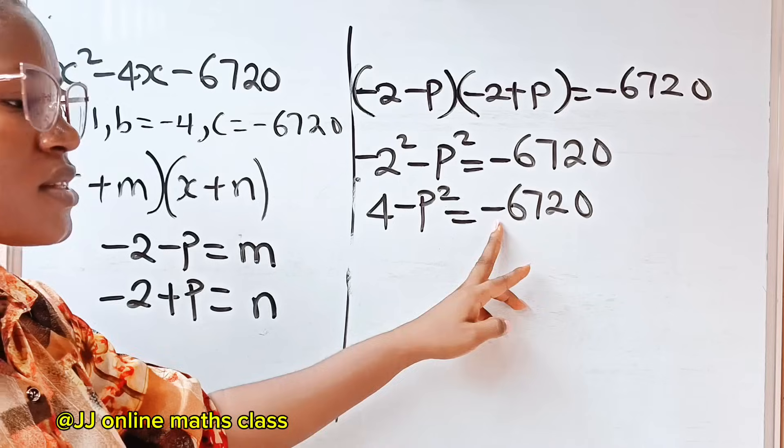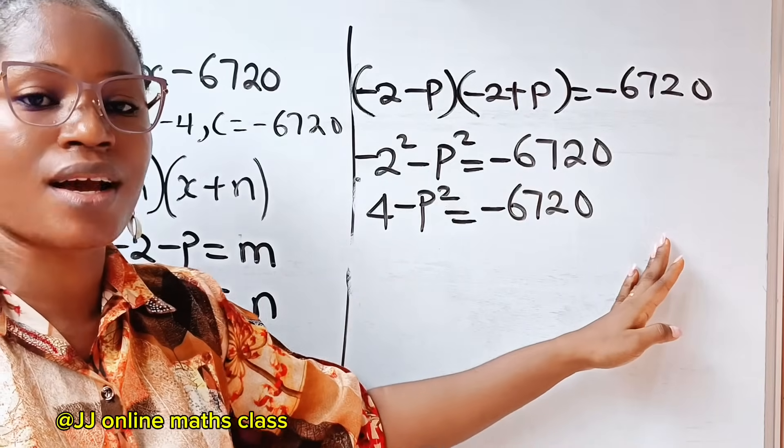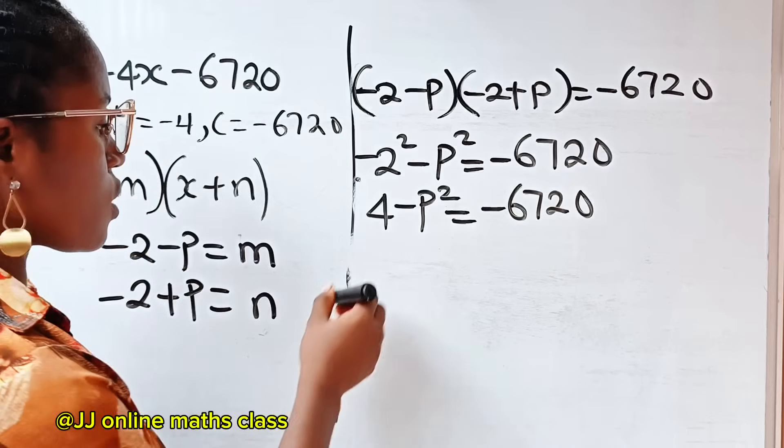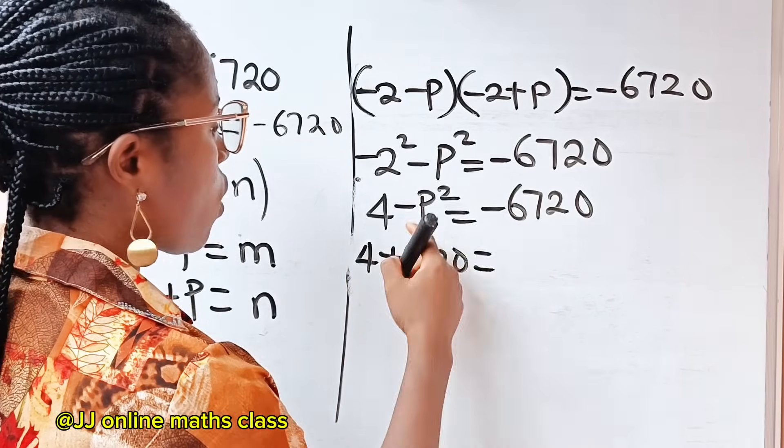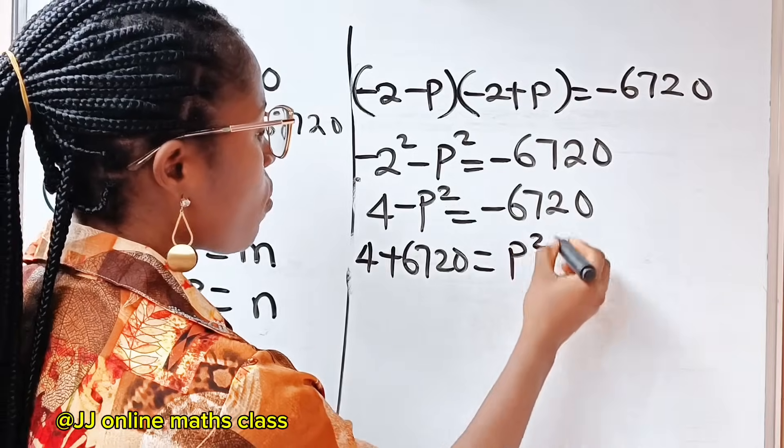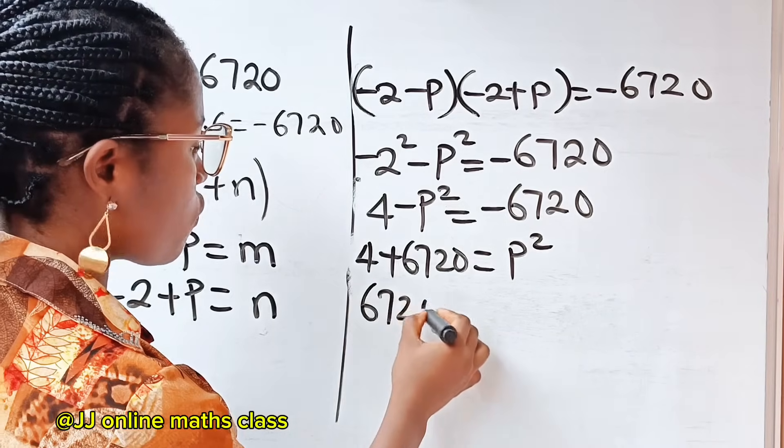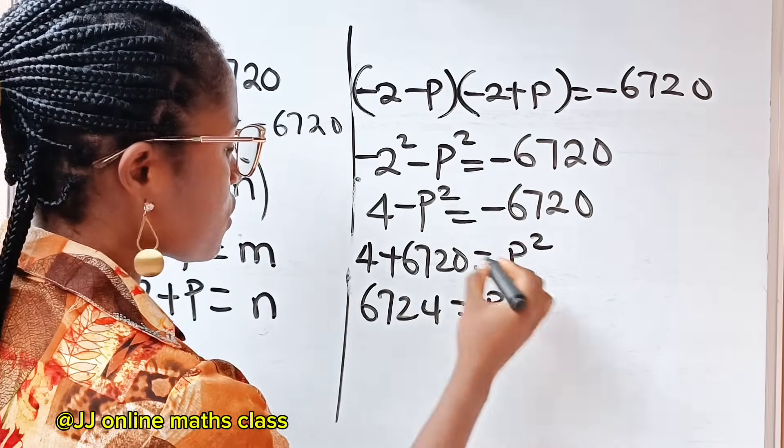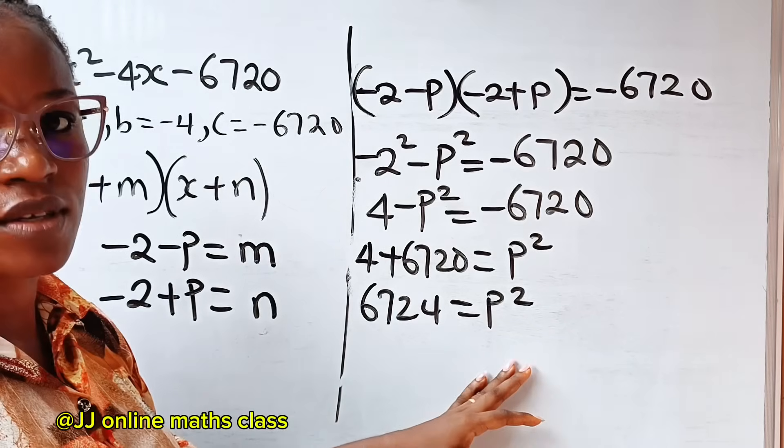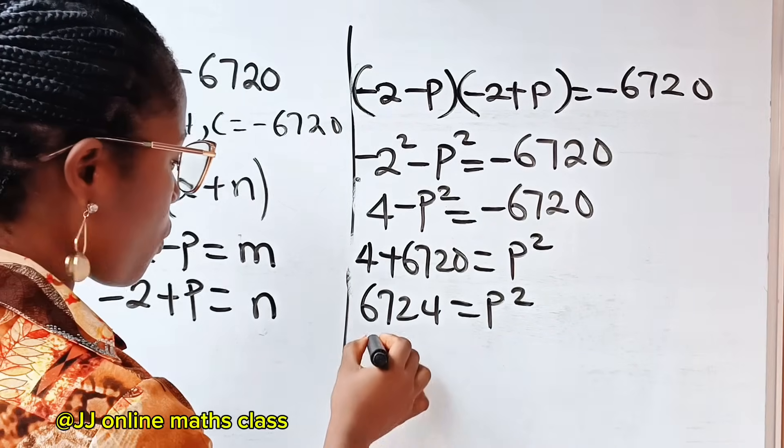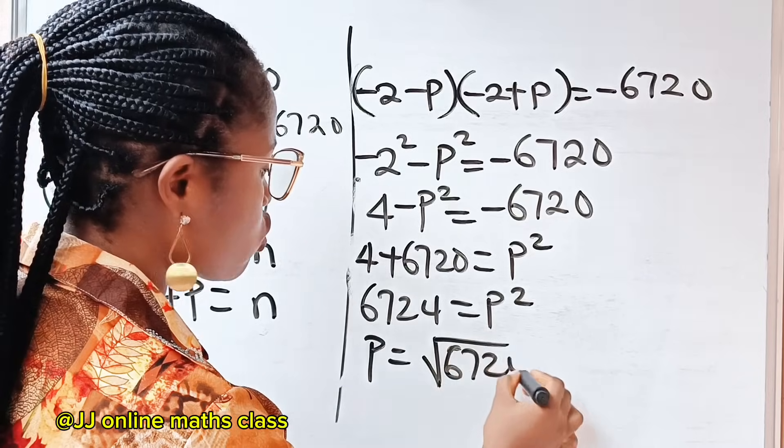To remove this negative sign, let me cross this to this side and then cross this one to the other side. So it's going to be 4 plus 6720 equals p squared. So we have 6724 equals p squared. To get the value of p, we take square root of both sides of this equation. So p will be square root of 6724.